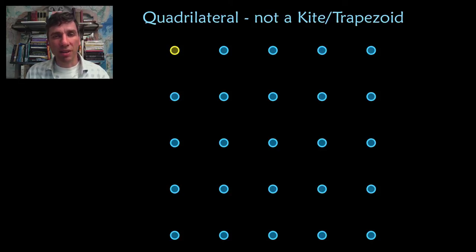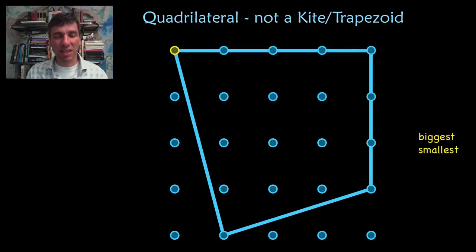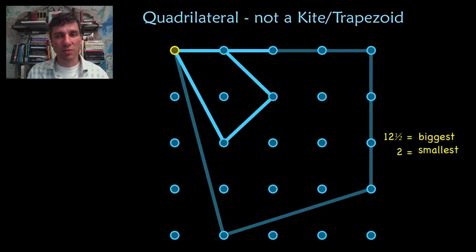A quadrilateral that is neither a kite nor a trapezoid. That's the biggest one and the smallest one. Try to find that. Here it is. There's the smallest one.